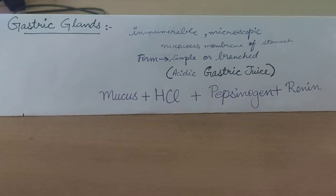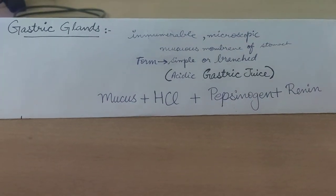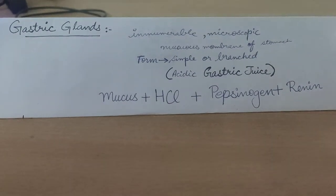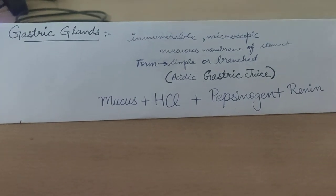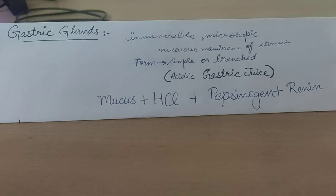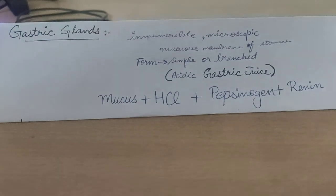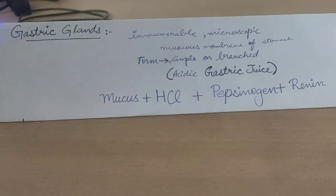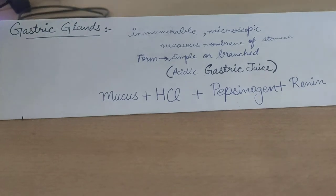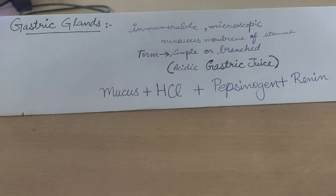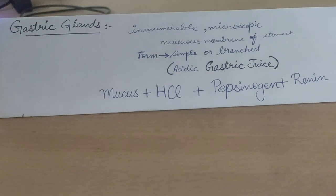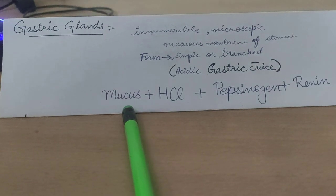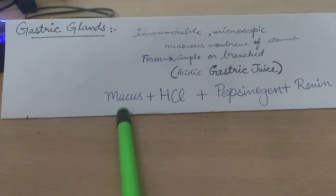Next are the gastric glands. Gastric glands are present in the inner lining (mucosal membrane) of the stomach. They are numerous and microscopic in structure, and exist either in simple or branched form. They are responsible for the acidic medium of the stomach because they secrete acidic gastric juices, including HCl — which provides the acidic medium — and mucus, which maintains fluidity and softness.